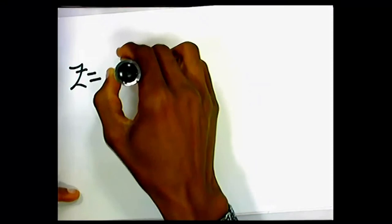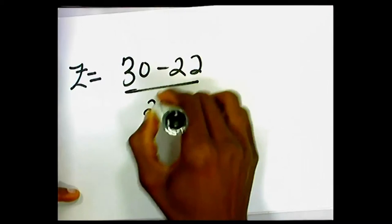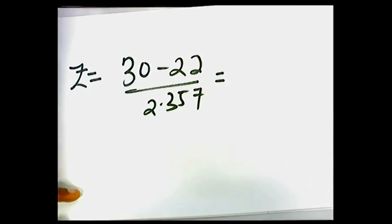So our z-score, so here it's going to look like it's 30 minus 22 all over 2.357. And this is going to give us 3.39. Now, what I really want us to consider here is what the question is asking. In fact, in reading the normal distribution table, what you really need is not necessarily the z-score. The z-score is a pointer to where to look for.